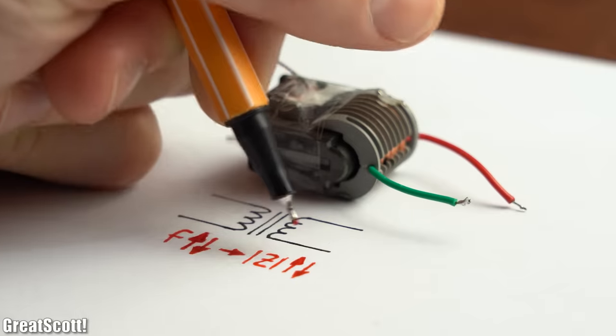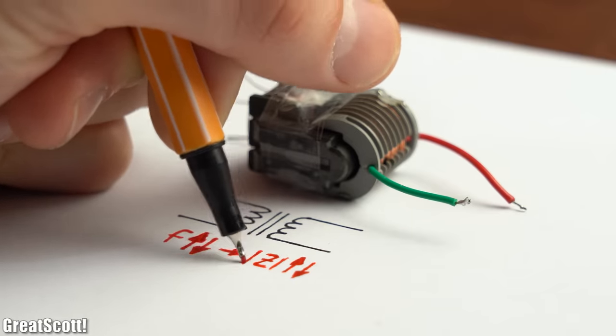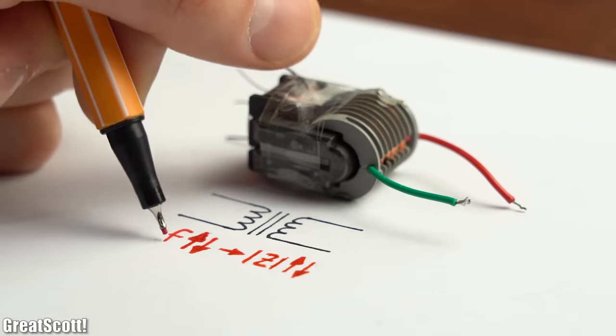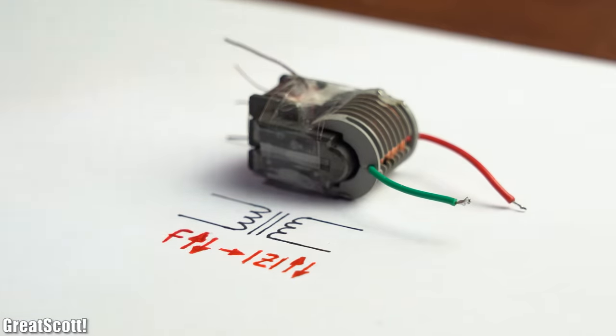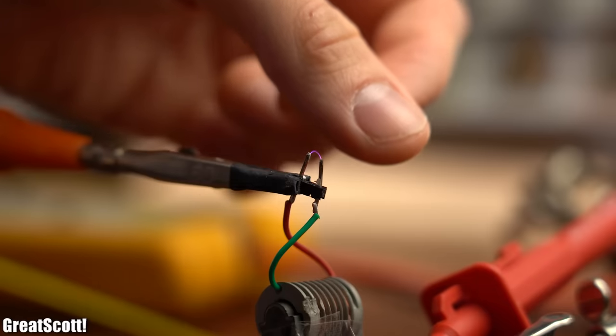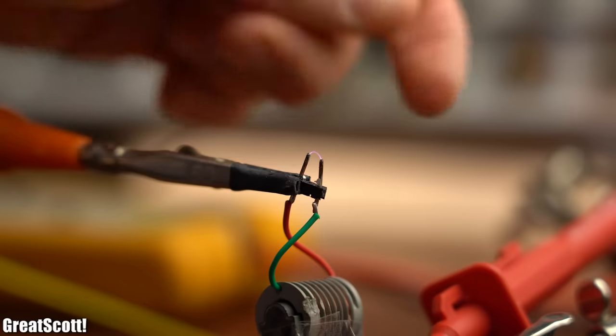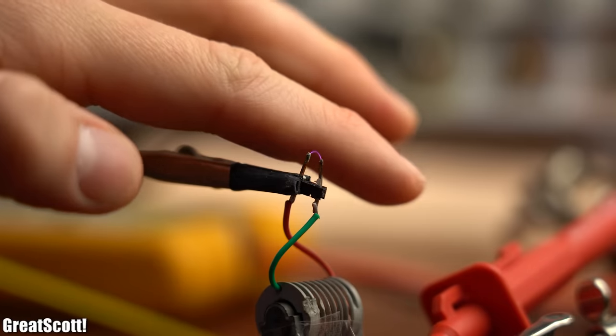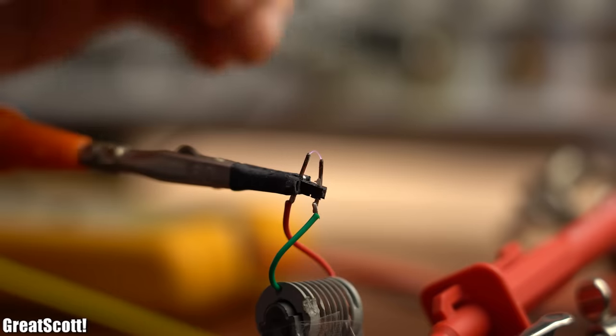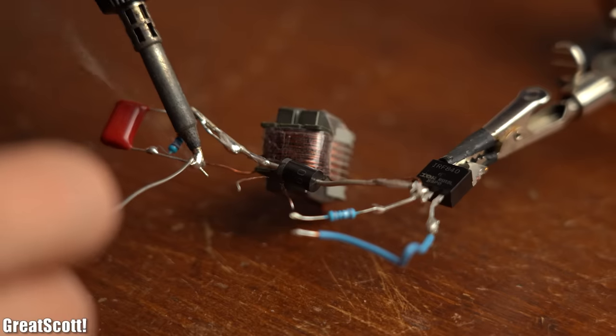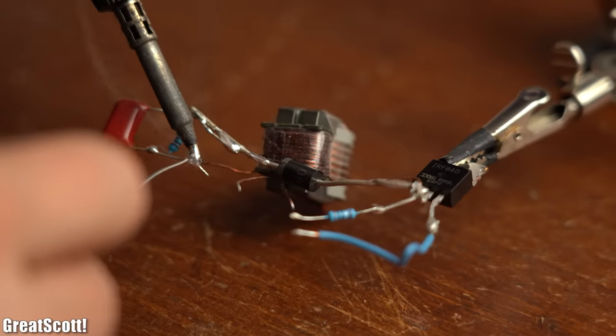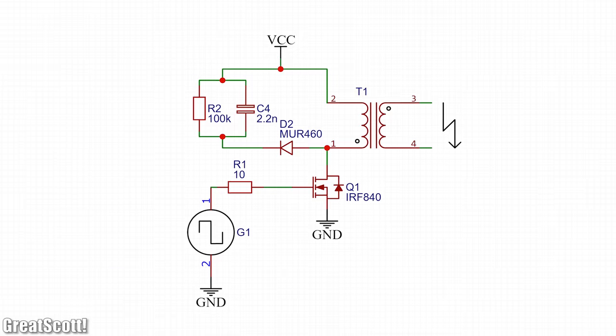That would be desirable though because with different frequencies the transformer as a whole does not only react differently due to its impedance but at a certain frequency and above arcs no longer shock us but only burn our skin which I definitely wanted to try out. So I built up a basic flyback converter circuit with a MOSFET according to this schematic.